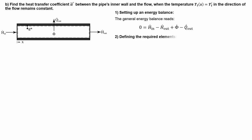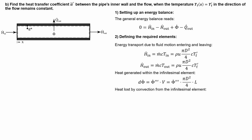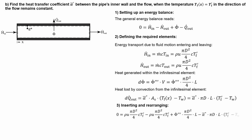So our energy balance for this problem will be the following, and now we have to define all relevant terms again. The energy transport due to fluid motion at the inlet and outlet yields from the mass flow times the specific heat capacity times the respective temperatures. For both the inlet and the outlet, the temperature of the fluid is the same, and thus both expressions are the same. The heat generated in the pipe yields from the volumetric source term multiplied by the volume of the pipe, which is the cross-sectional area times the pipe length. The heat loss by convection can be written using Newton's law of cooling again, where the surface area is that of the entire interface between the pipe and the fluid. Having defined all terms, we can put them into the energy balance, which gives this expression for the heat transfer coefficient between the pipe's inner wall and the fluid. This example demonstrates how the heat transfer coefficient can be found from a global energy balance around the entire pipe.